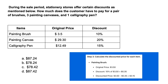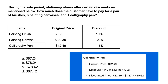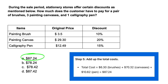Now we calculate the discounted price for each item. Painting brush: original price $3.50, 10% discount = $0.35, so discounted price is $3.15. Painting canvas discounted price is $23.44. Calligraphy pen discounted price is $10.62. Finally, adding up all costs: $6.30 + $70.32 + $10.62 gives us a total of $87.24.